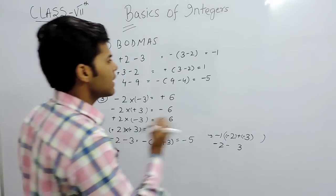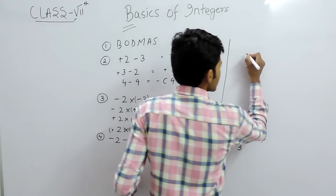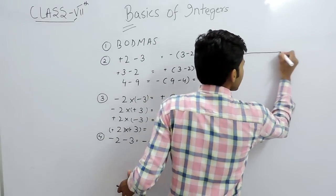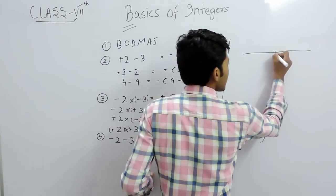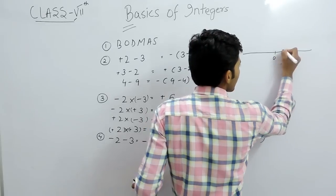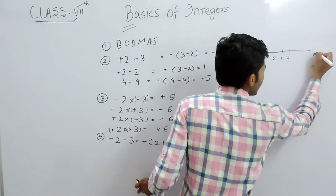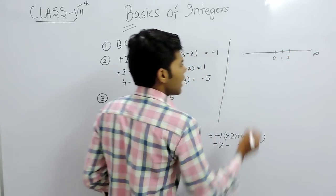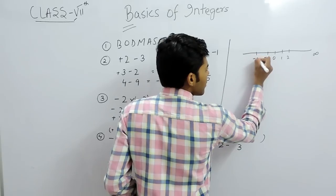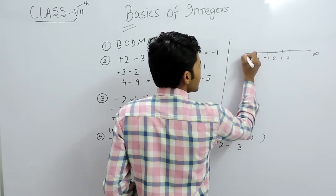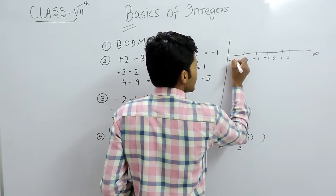The last concept is the number line. A number line is a line where we mark numbers from 0, 1, 2 up to infinity on the right, and minus 1, minus 2, minus 3 down to minus infinity on the left.